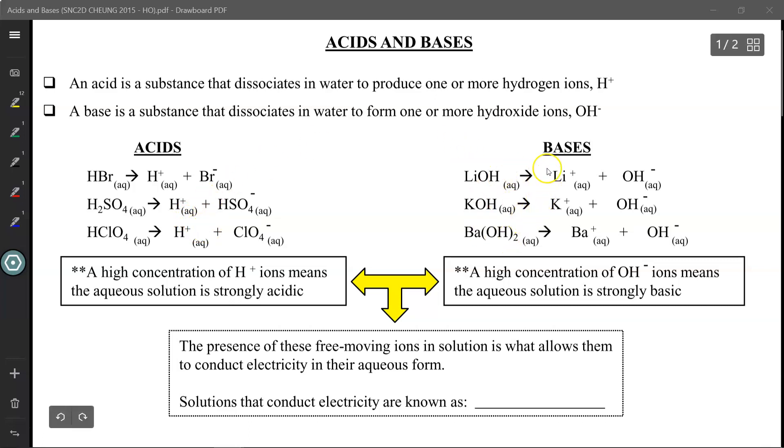On the right-hand side, we have a list of bases. You'll notice every single one has a hydroxide ion in their chemical formula. During dissociation, when they dissolve in water making an aqueous solution, they will release a metal ion like lithium, but also the hydroxide ion. The potassium and hydroxide will split up, while the barium and hydroxide will also split up.